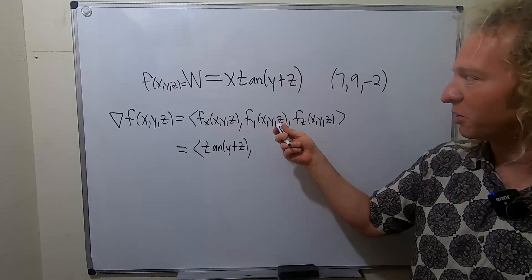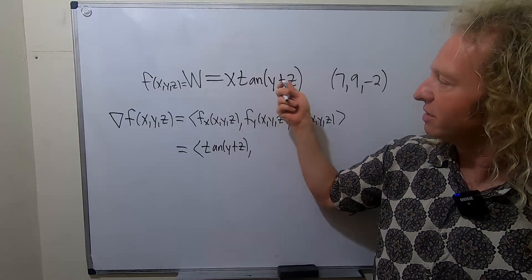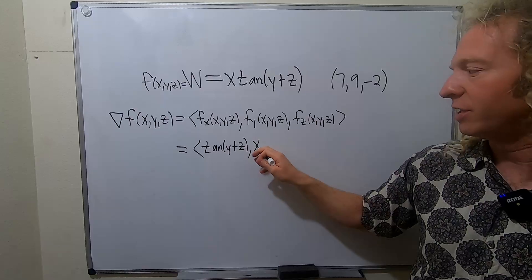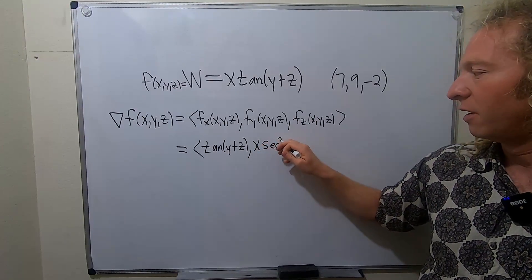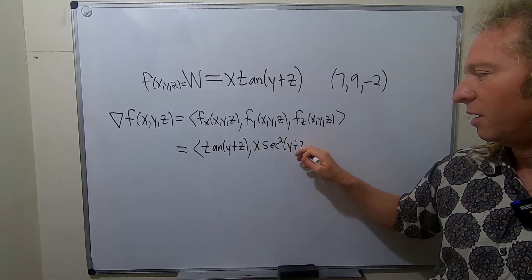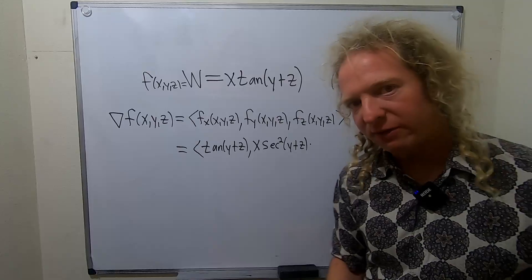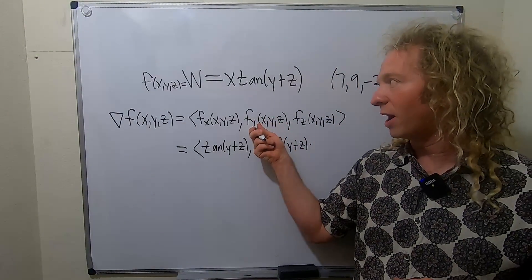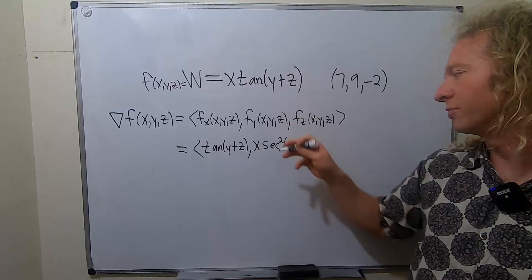Now we have to take the partial with respect to y. That means x and z are constants. So the x hangs out. The derivative of tangent is secant squared of y plus z times the derivative of the inside. So it'll be 1 plus 0, so just 1.